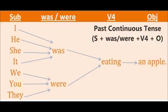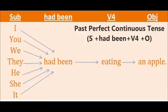The next tense is past perfect continuous tense. The structure is subject plus had been plus V4 plus object. Like past perfect tense used had plus V3, here we use had been plus V4. Had been is used by all the subjects. Examples: I had been eating an apple, you had been eating an apple, we had been eating an apple, and so on. We use the same helping verb 'had been' for all the subjects.